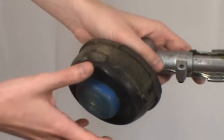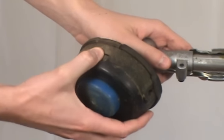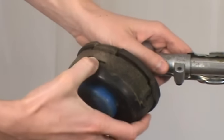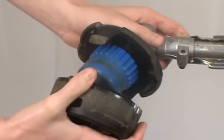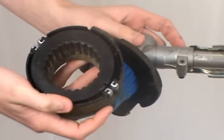First, remove the trimmer head body by pressing the tabs. Then take out the spool.